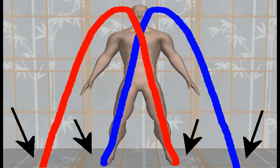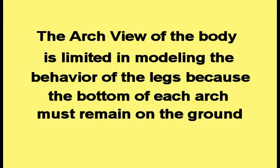The origination points of each arch of the arch view of the body are on the ground — each arch starts on the ground and ends on the ground. The arch view of the body is therefore limited in modeling the behavior of the legs, because the bottom of each arch must remain on the ground.